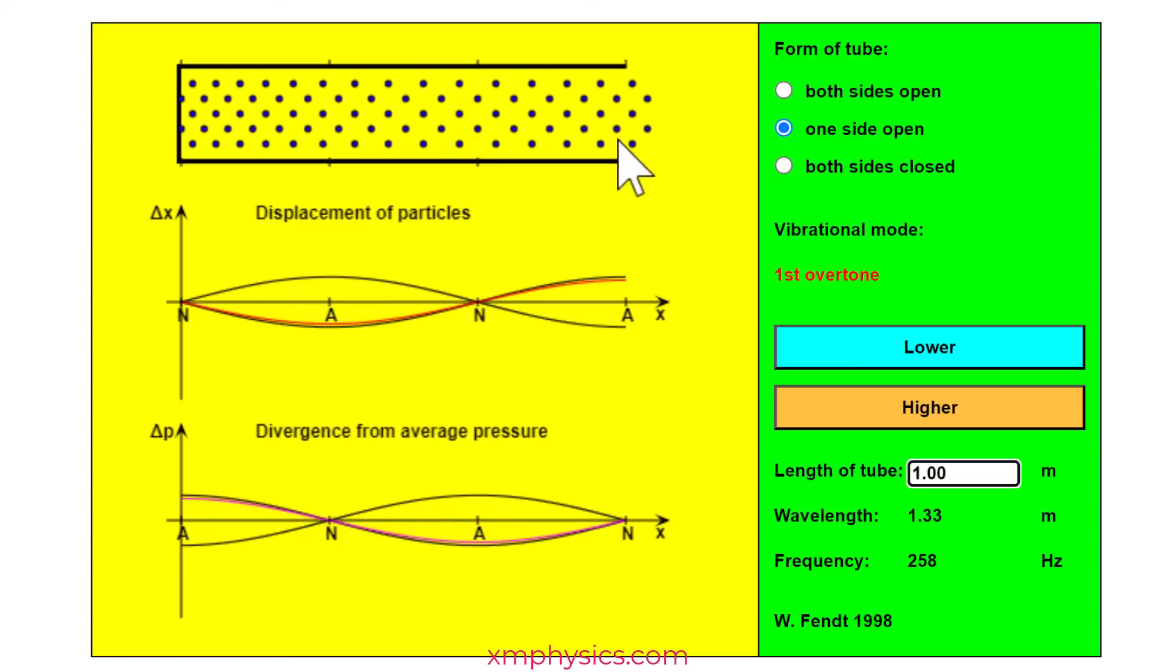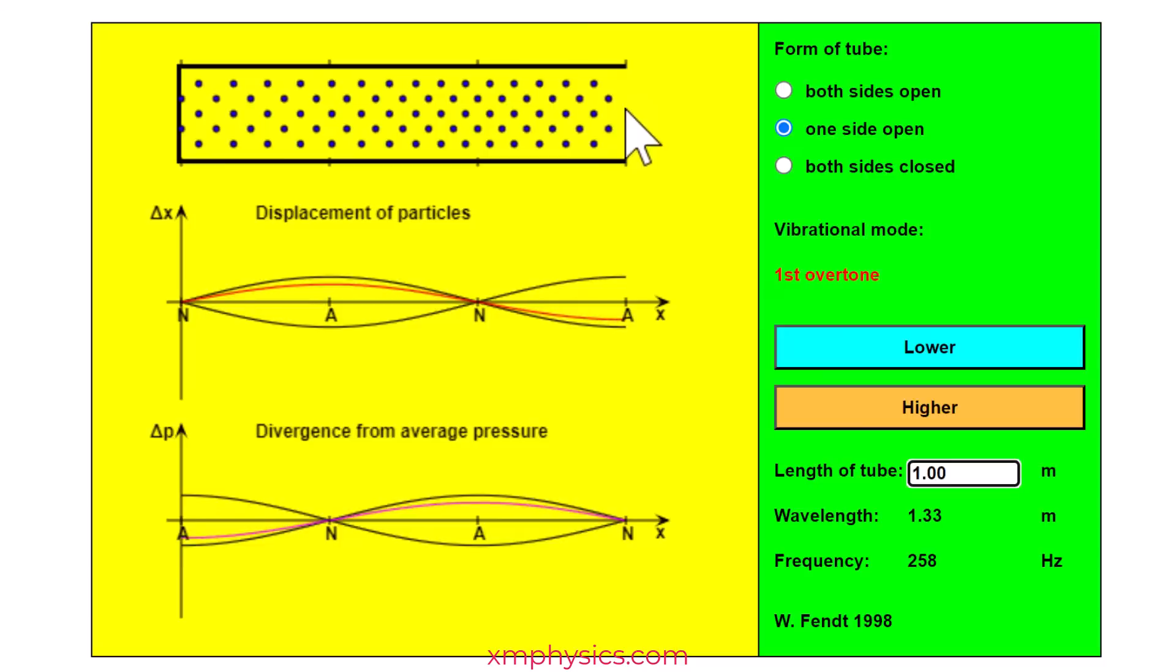So this end is always maintained at atmospheric pressure. So the pressure is stuck at atmospheric pressure here. That's why it's a pressure node. So that's another way you can remember.